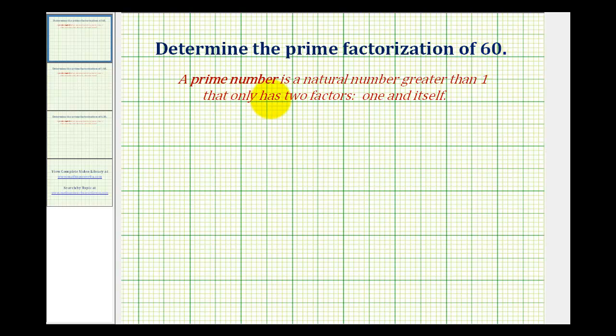A prime number is a natural number greater than one that has only two factors, one and itself. So to determine the prime factorization of 60, we'll make a prime factorization tree.